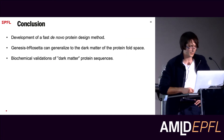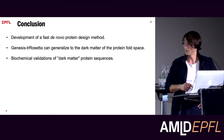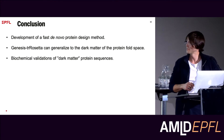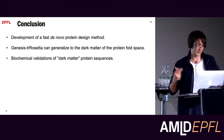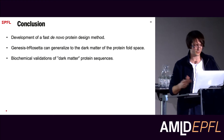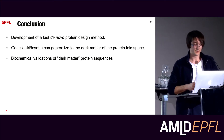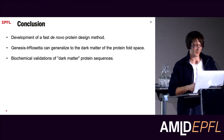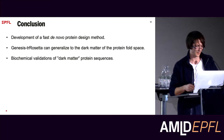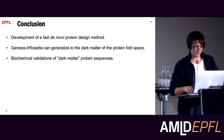To conclude, I've shown you a fast method for novel protein design based on Genesis and TR Rosetta. This method is able to generalize to new folds — to the dark matter of the protein fold space where it was not trained on. And we were able to biochemically validate some of those dark matter protein sequences.